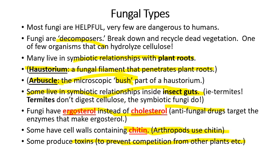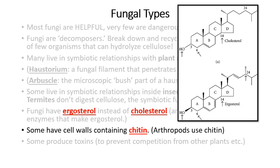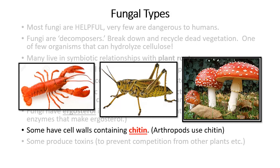Many fungi produce toxins — the reason Penicillium chrysogenum produces penicillin is to kill bacteria in the same area, preventing them from competing for the same nutrients. Many fungi produce toxic substances that kill humans or animals that eat the fungus, and also kill competing bacteria. Cholesterol versus ergosterol are very closely related but different enough that certain chemicals can target the enzymes that make ergosterol without affecting the enzymes that make cholesterol.